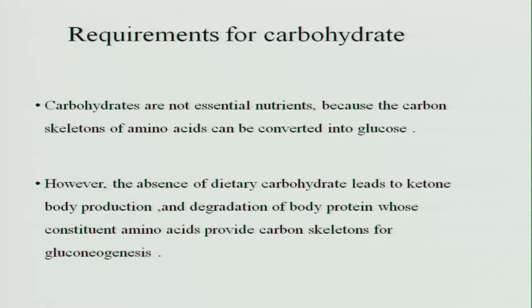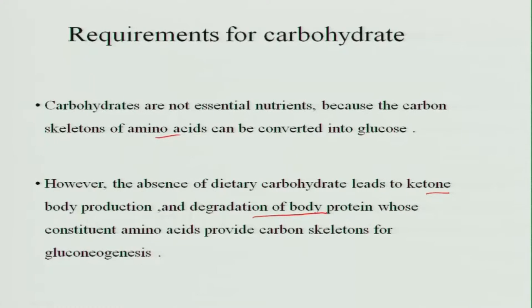Regarding the requirement of carbohydrates: carbohydrates are not considered essential nutrients because the carbon skeletons of amino acids can be converted into glucose, and protein can also be converted into energy. However, when insufficient carbohydrate is taken, it leads to ketone body production — ketonic acids are produced because fats are not properly assimilated, and there is degeneration of body protein whose main role should be body-building functions.